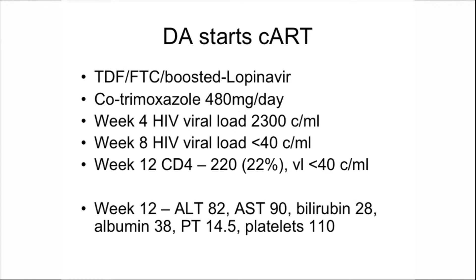He starts combination antiretroviral therapy on one of my favourite regimens: Truvada and boosted lopinavir, i.e. Kaletra. He also gets co-trimoxazole 480 milligrams once a day as primary PCP prophylaxis. He has a fantastic HIV biological response. By week 12 he is HIV undetectable, CD4 count up to 220 at 22%. His liver enzymes are followed carefully — ALT is 82, AST 90. Platelet count has gone up a little, prothrombin time remains normal, and his albumin is climbing.